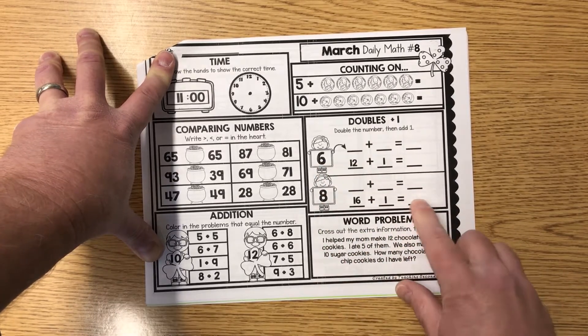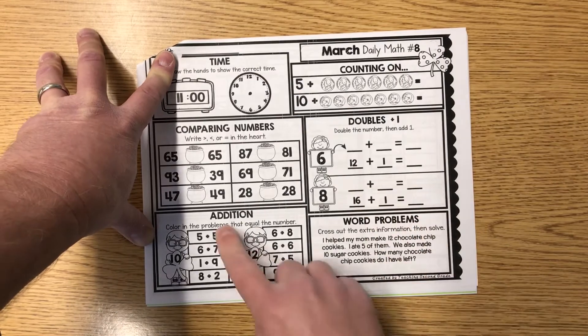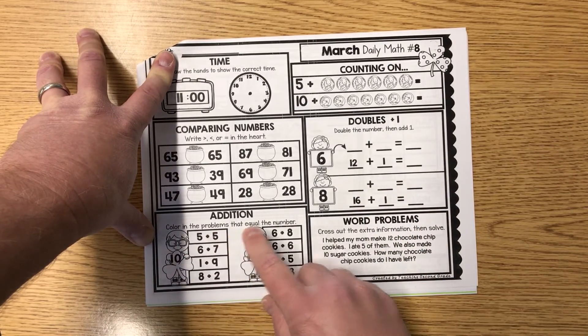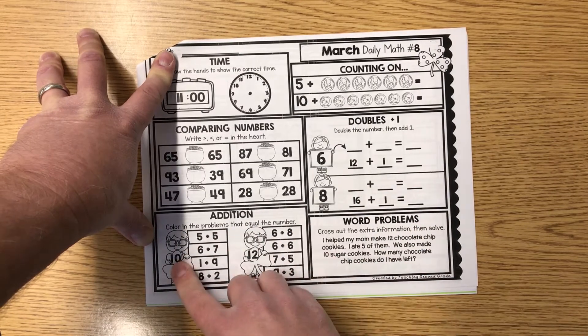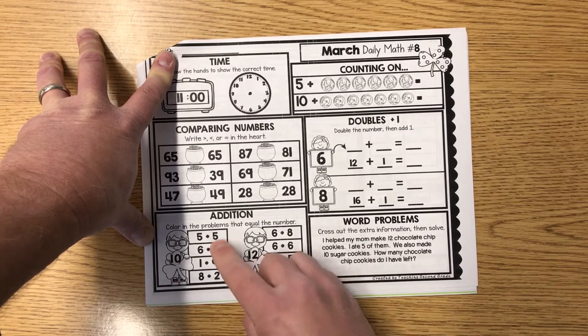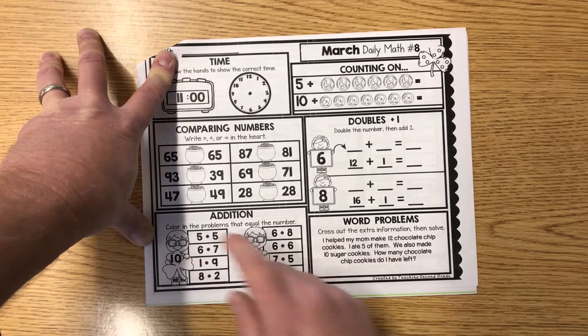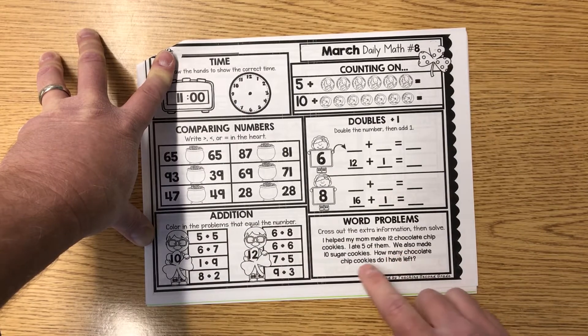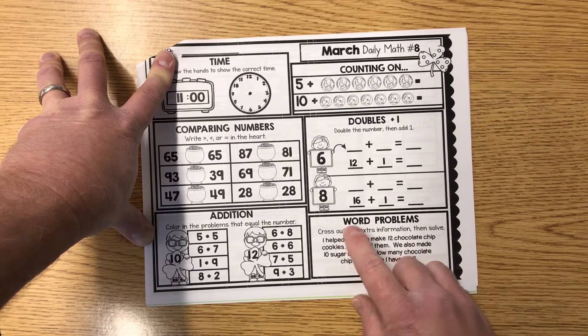Addition: color in the problems that equal the number. Now we have 10, we have 12, and we have 12. Only two of those additions end up to each one - see what you can figure out. And how many chocolate chip cookies do I have left? Here's your word problem.